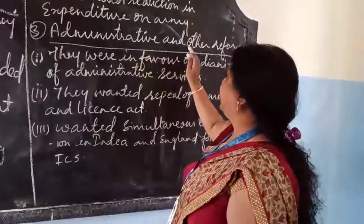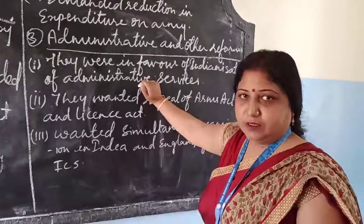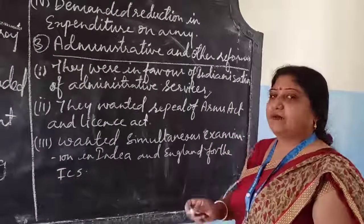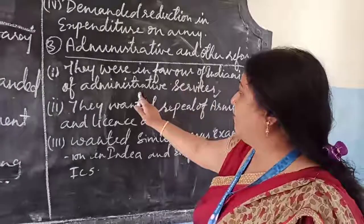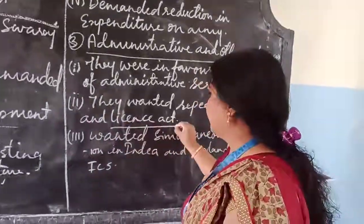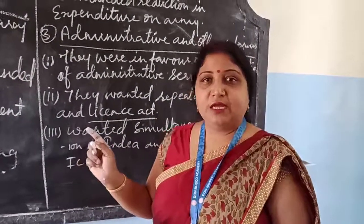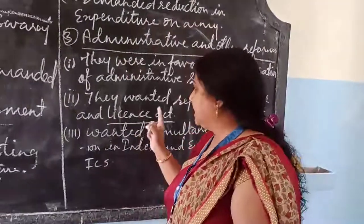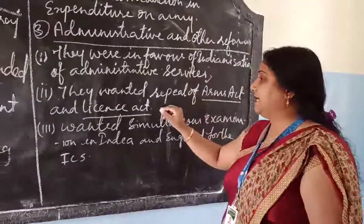Under administrative and other reforms, there are several points in your book, but you will learn four key points. First, they were in favor of Indianization of administrative services — meaning all high posts should be given to Indians. Second, they wanted repeal of the Arms Act and the License Act, which were passed by the British government under which Indians were not allowed to keep arms, while the same law was not applicable to Europeans.